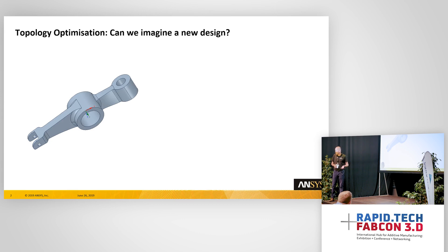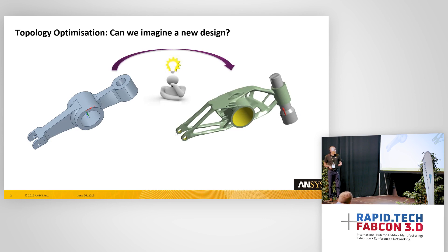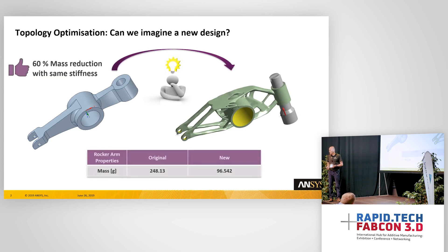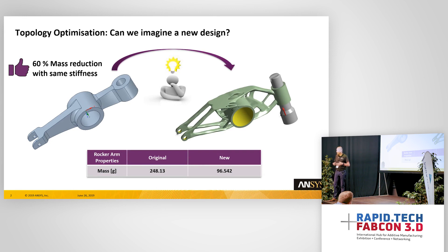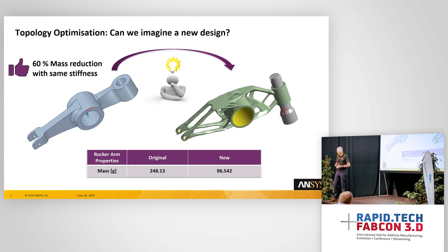I'm going to concentrate on topology optimization, but I'll also explain the general range of optimization solutions you might consider to improve product design. For anyone that doesn't know what topology optimization is, it's basically: can you save weight from some geometry? This rocker arm on the left has a particular mass, and by using physics, this form of topology optimization removes material from where there are low stress concentrations, giving you an alternative result with the same performance characteristics. The obvious benefit is that you're going to save weight.